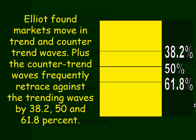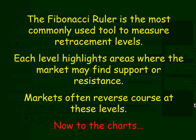Elliott found that markets move in trend and counter-trend waves. The counter-trend waves frequently retrace against the trending waves by 38.2, 50, and 61.8%. This is what's known as a Fibonacci scale or ruler. The Fibonacci ruler is one of the most commonly used tools to measure retracement levels. Each level highlights areas where the market may find support or resistance.